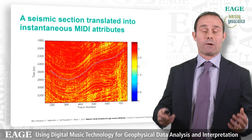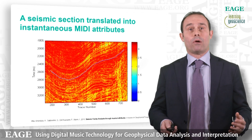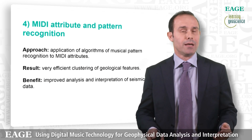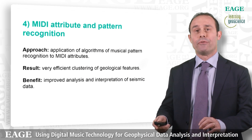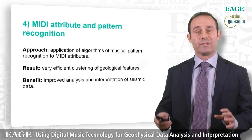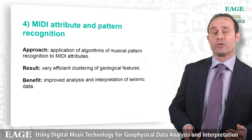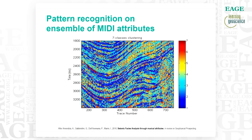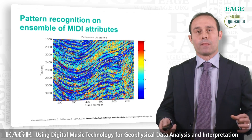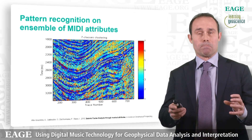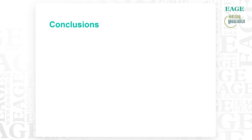We can combine all these attributes or part of them in order to perform a very accurate and powerful pattern recognition, working on big 2D or 3D data sets, exploring and mining these big data sets in order to identify and classify geophysical features that correspond with geological features. The benefit is an improved analysis and interpretation of seismic data. This is a 7-class clustering example where we clustered our MIDI attributes into 7 color classes to identify similar geophysical features that hopefully correspond with similar geological features.